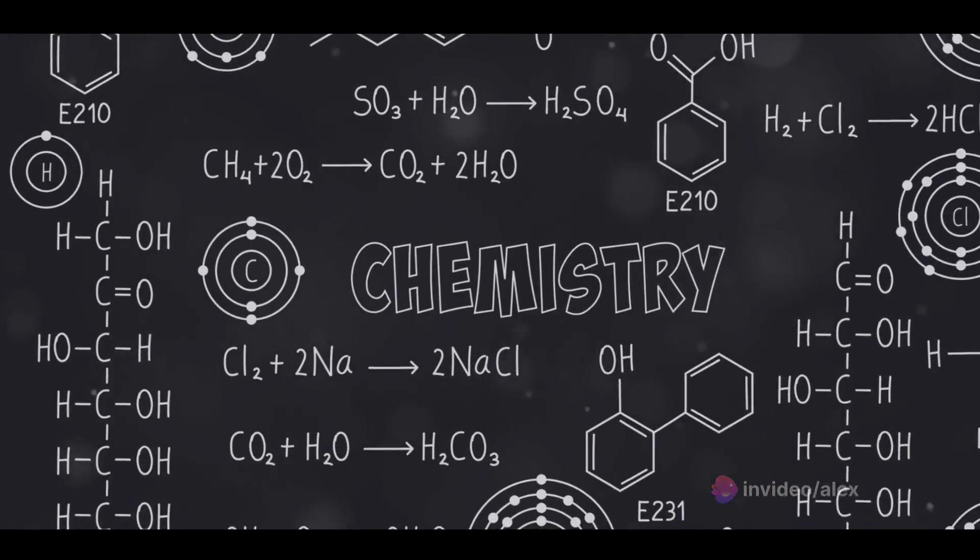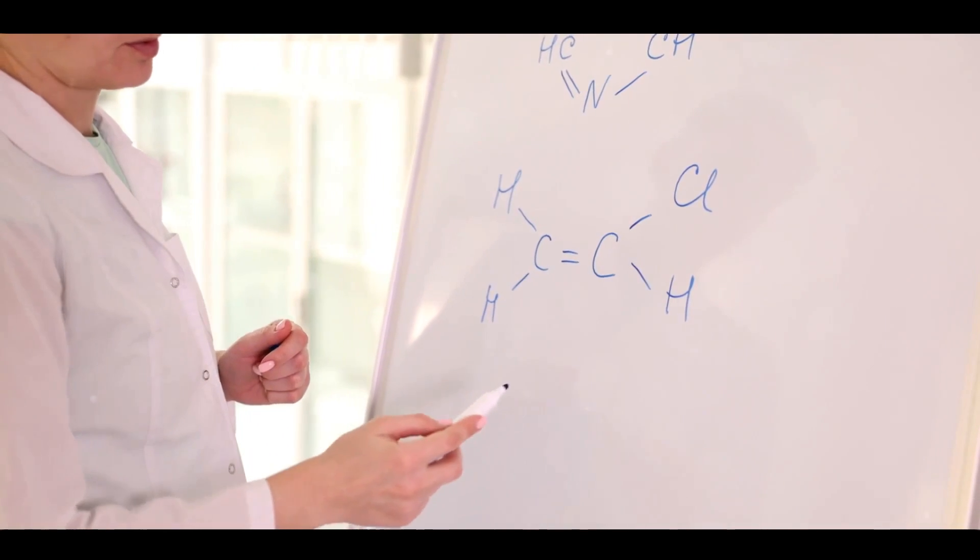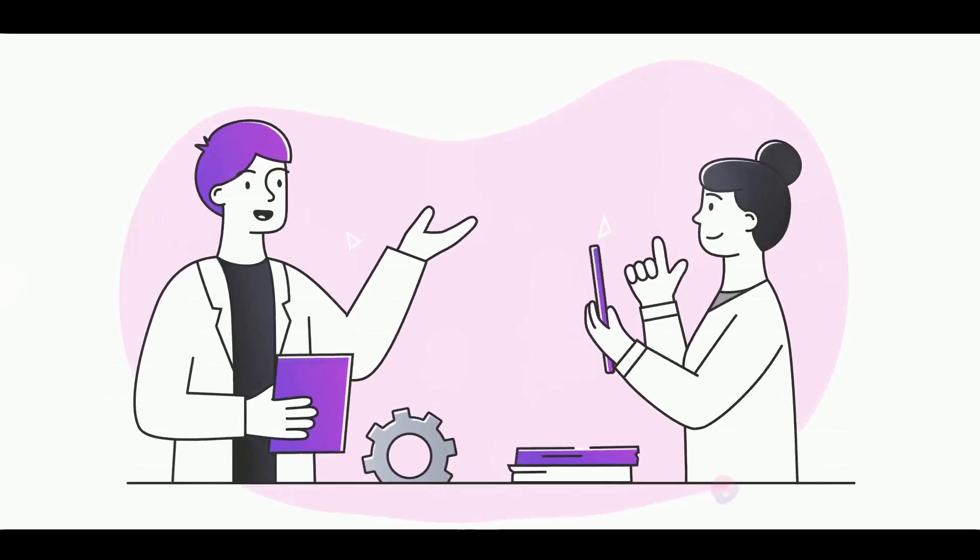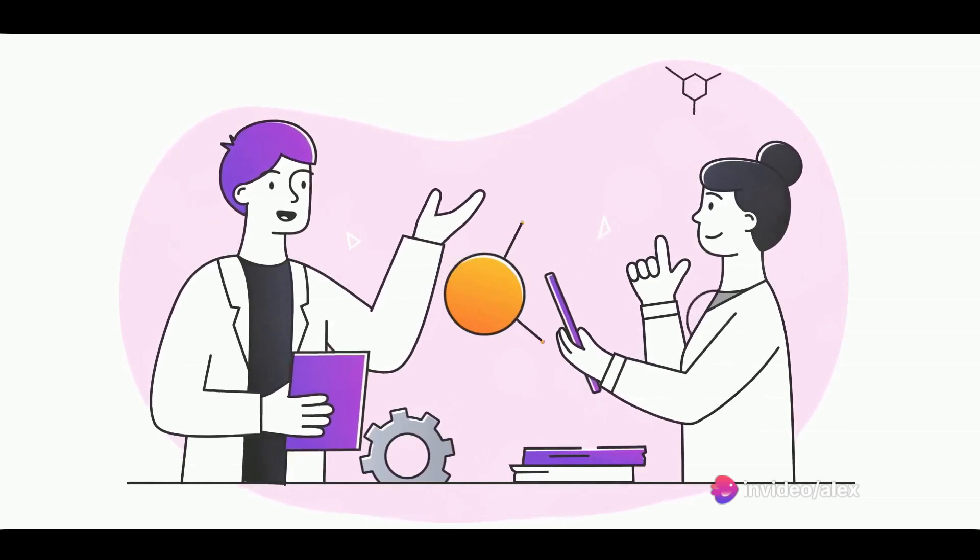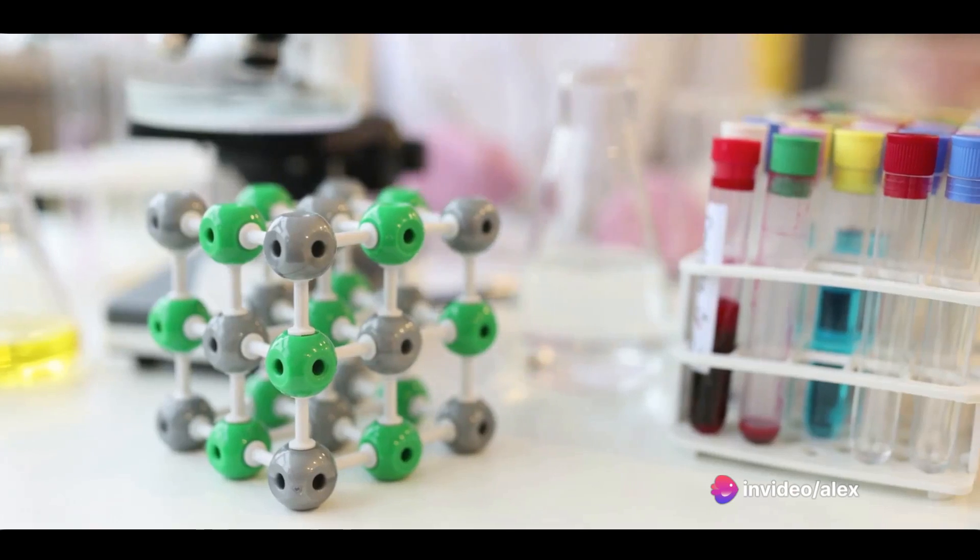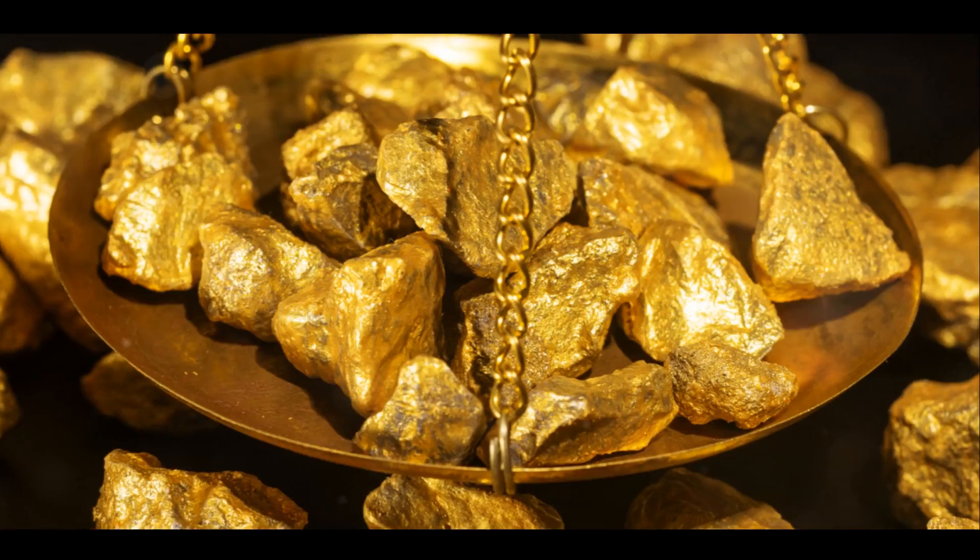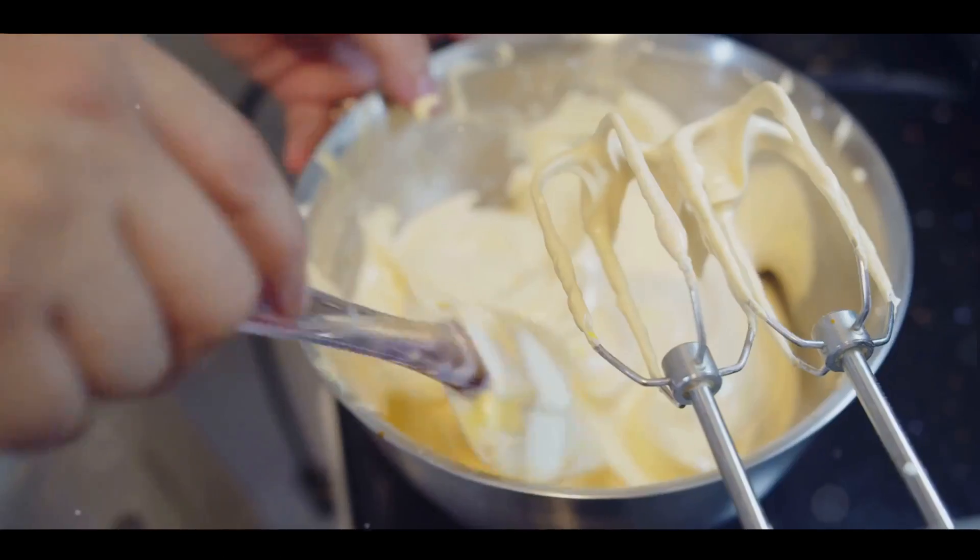You see, there's this unyielding rule in the realm of science known as the law of conservation of mass and energy. This law states that matter and energy can neither be created nor destroyed. They can only change forms. So we can't simply take a bit of carbon here, a splash of oxygen there, and voila, create gold. No, gold has to come from gold.